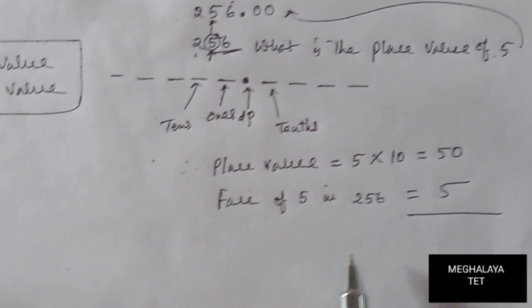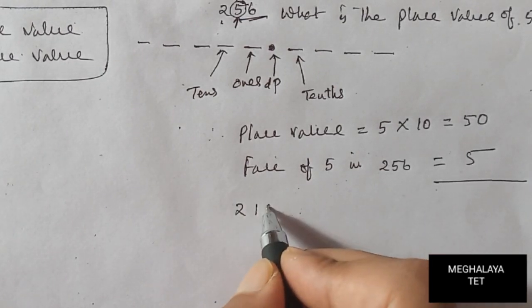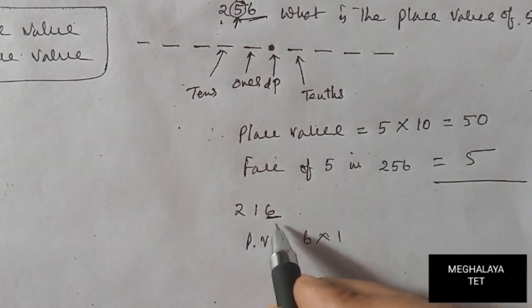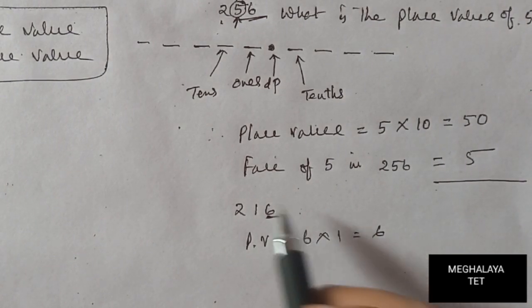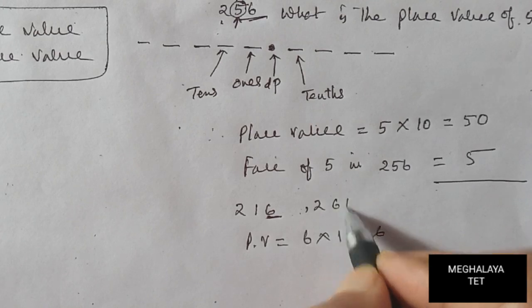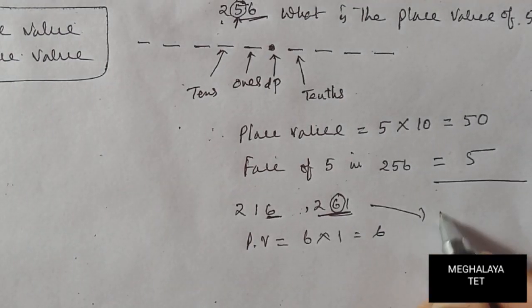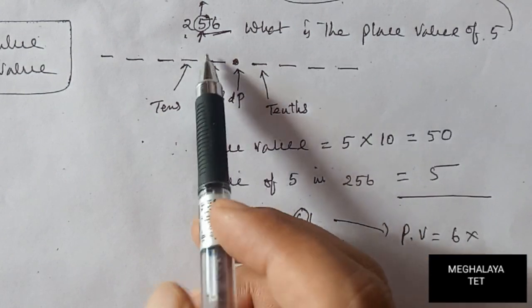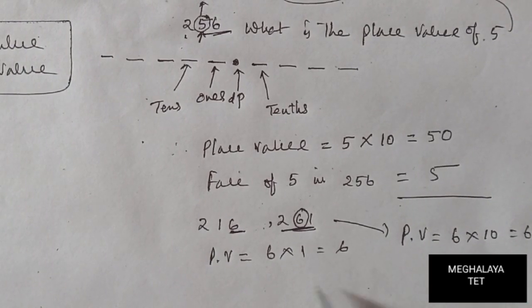For place value, we need to identify the place of the digit. For example, in 2016, the place value of 6: PV = 6 × 1 = 6, since 6 is in the ones place. In 261, the place value of 6: PV = 6 × 10 = 60, since 6 is in the tens place.